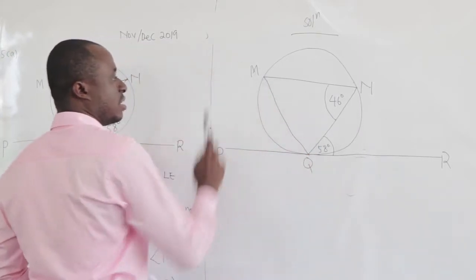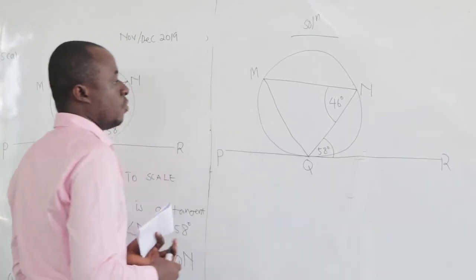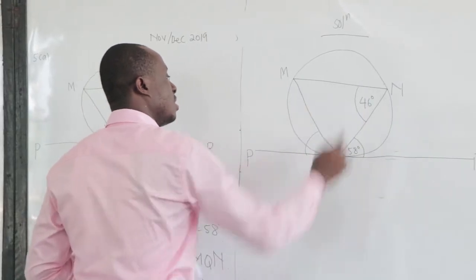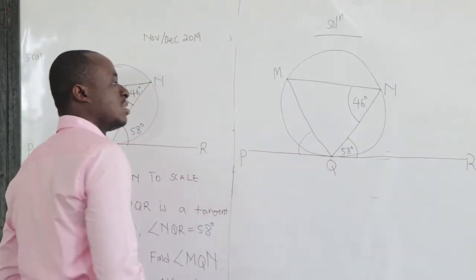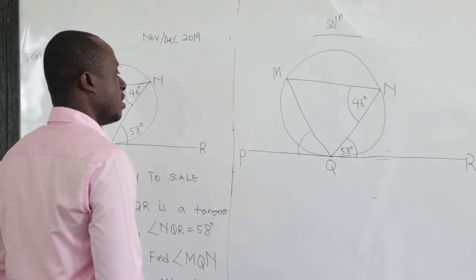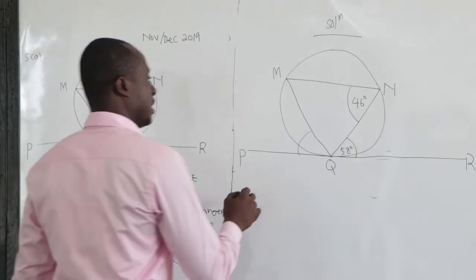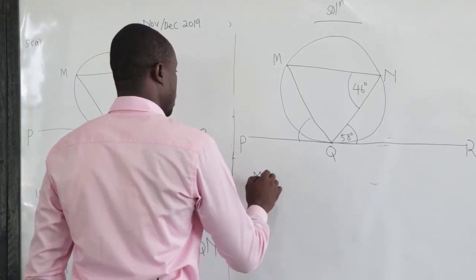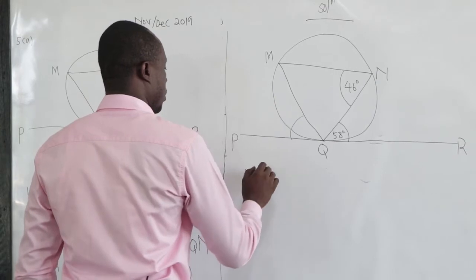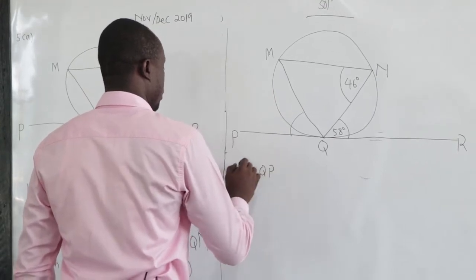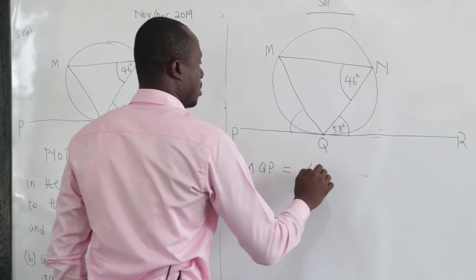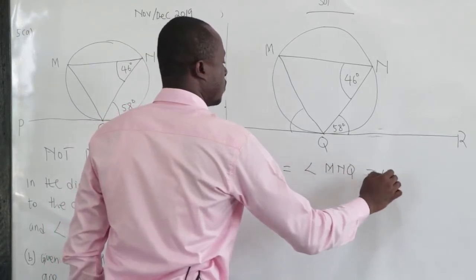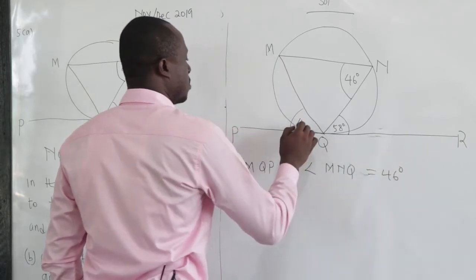So this angle is equal to the angle over here. We can say that MQP is the same as angle MNQ, and this is 46 degrees.